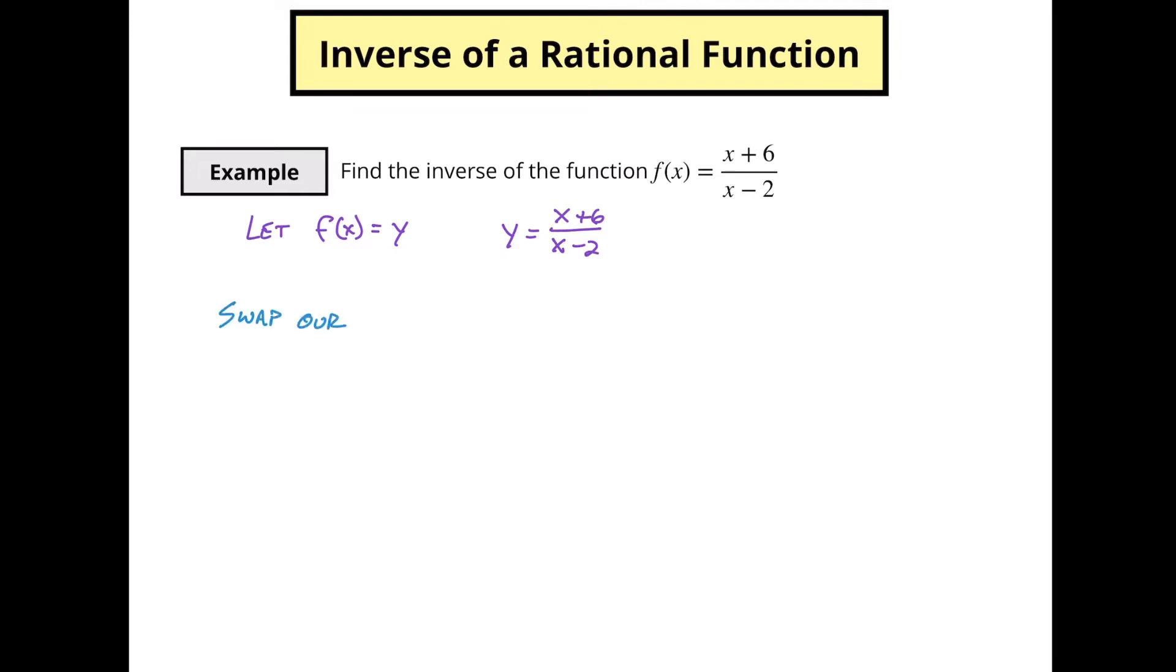Next we're going to swap our x and y's. So we're going to make this x and we're going to have y plus 6 over y minus 2. And now we're going to isolate our y.